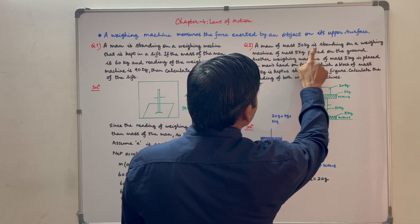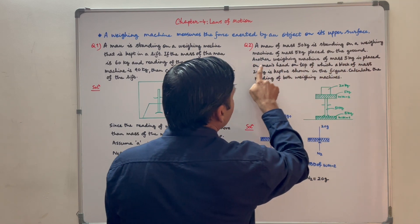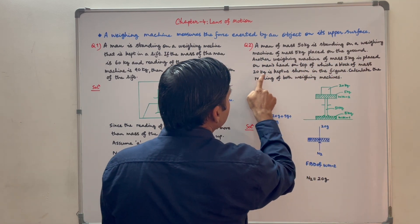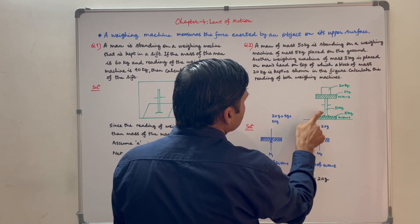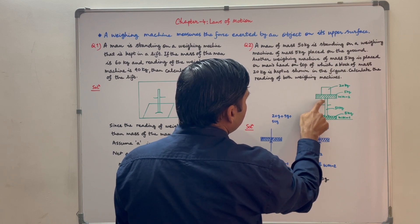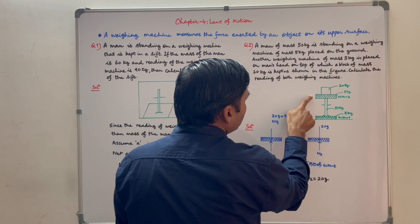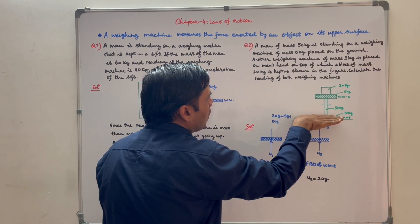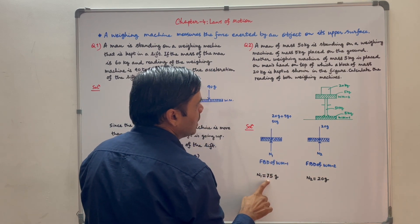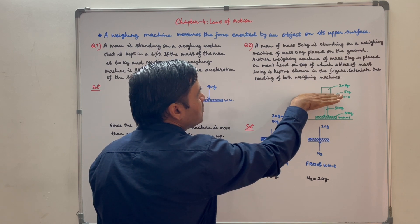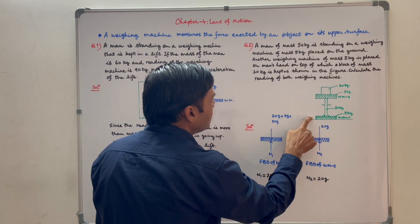Second question: a man of mass 50 kg is standing on a weighing machine of mass 5 kg placed on the ground. Another weighing machine of mass 5 kg is placed on the man's head, on top of which a block of mass 20 kg is kept. Calculate the reading of both weighing machines. The force exerted on the upper surface of the first weighing machine will be 20g plus 5g plus 50g, that is 75g. The force exerted on the upper surface of the second weighing machine will be 20g. So the readings are 75g and 20g respectively.